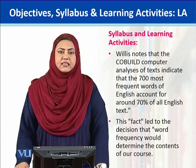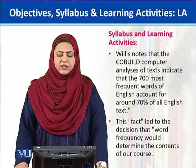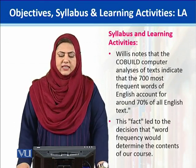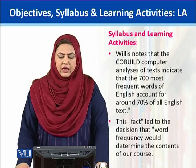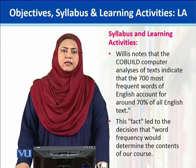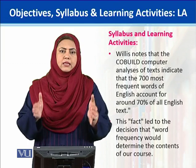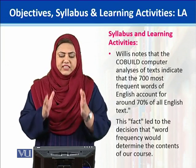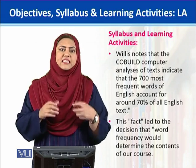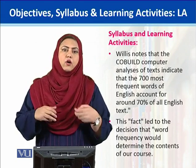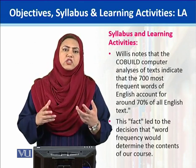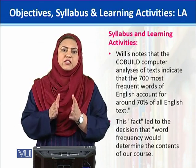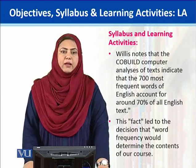As far as the syllabus and learning activities are concerned, Willis notes that the CoBuild computer analysis of texts — the corpora collected through that — indicates that the 700 most frequent words of English account for around 70% of all English text. This is very interesting: if 70% of all English language use is the repetition of the same 700 words or collocations, then a learner who learns those 700 chunks would have very good mastery over the vocabulary of English.